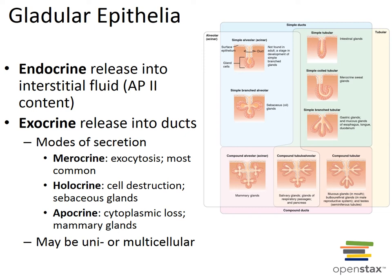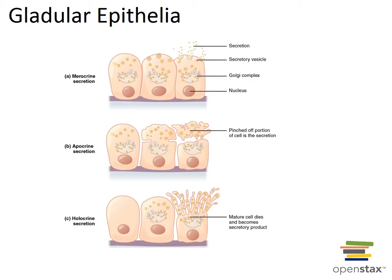Apocrine secretion involves cytoplasmic loss of the gland, as seen in mammary glands. Glands may also be unicellular or multicellular. Multicellular exocrine glands are composed of a duct and a secretory unit; the duct can be simple or compound, and the secretory units can be tubular, alveolar, or tubulo-alveolar. These different secretion modes illustrate whether a small vesicle is pinched off or whether a portion or the whole cell ruptures and dies.